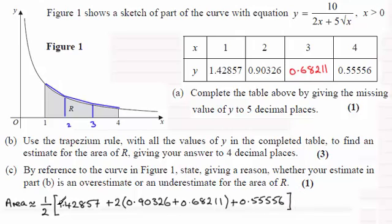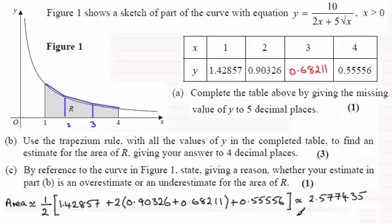If you work that out, you should find this comes to an approximate area of 2.577435. We need to give this answer to four decimal places, so that's 2.5774.